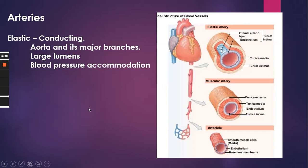Now let's start talking about some specific types of blood vessels, and we're going to start with the arteries. We're going to pretend that we're blood leaving the heart and entering an artery, because arteries carry blood away from the heart.